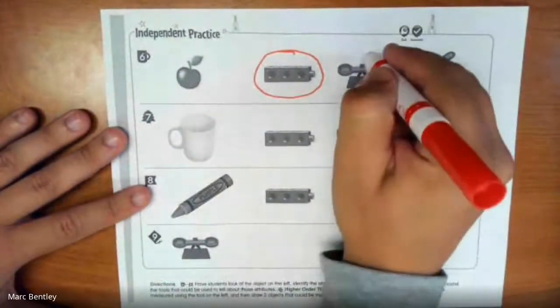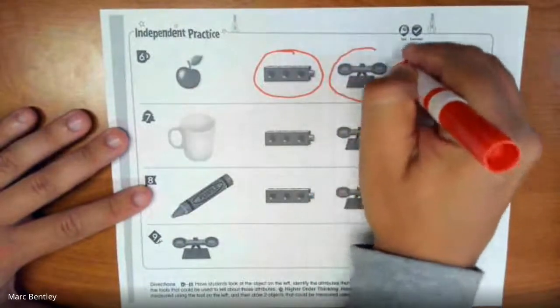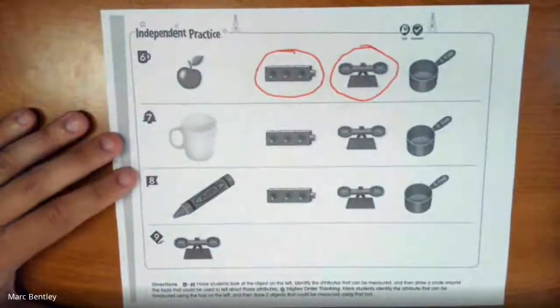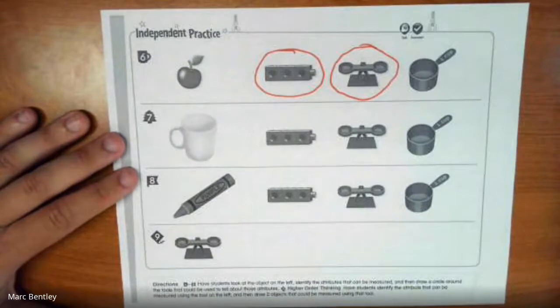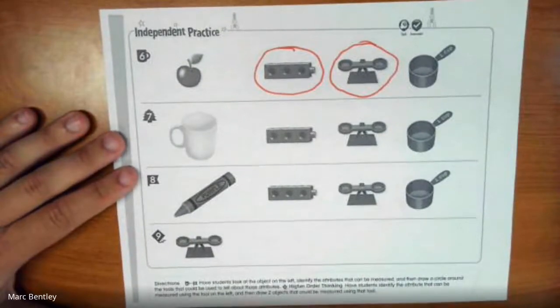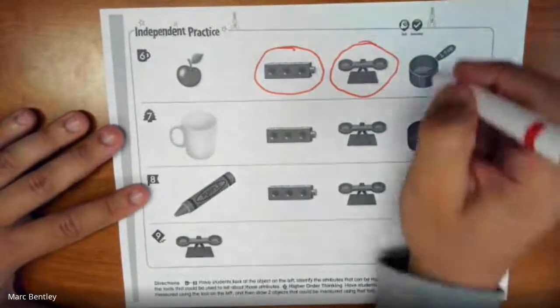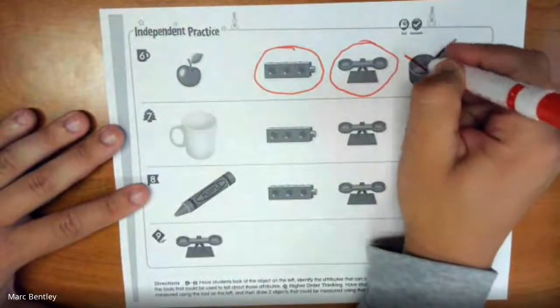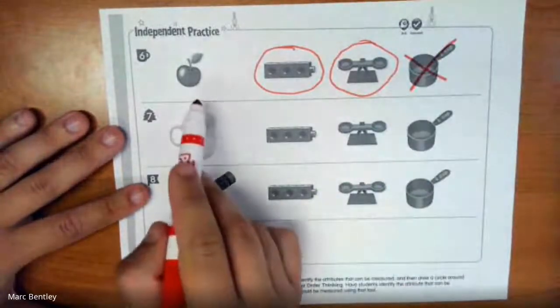We could weigh the apple as well on the scales to find out how heavy it is. But its capacity, we could not measure because it is a solid object.